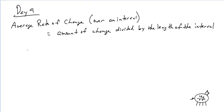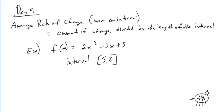Alright, so let's start out with just a function here. If I said f of x is equal to 2x squared minus 3x plus 5. And I said your interval was between 5 and 8. Okay, it's very simple. Your average rate of change, arc, is equal to f of 8 minus f of 5 over 8 minus 5.